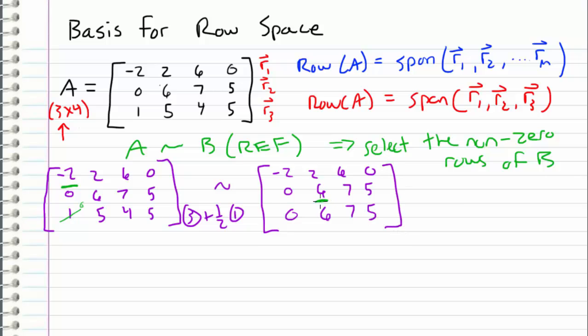And now I'm going to move on to this pivot position, and I want to eliminate everything below it. So I'll take the third row again, and I'm going to subtract the second row. And what I get is the row equivalent matrix, negative 2, 2, 6, 0, 0, 6, 7, 5, and 0, 6 minus 6 is 0, 7 minus 7 is 0, and 5 minus 5 is 0.